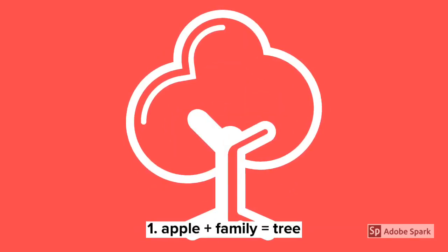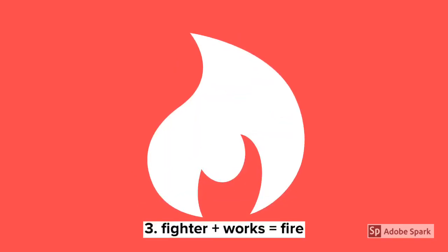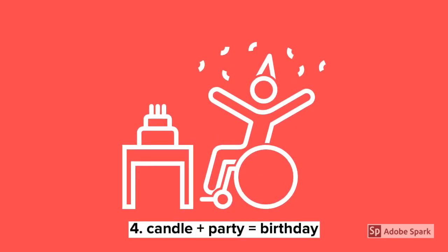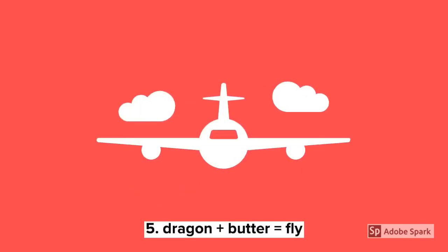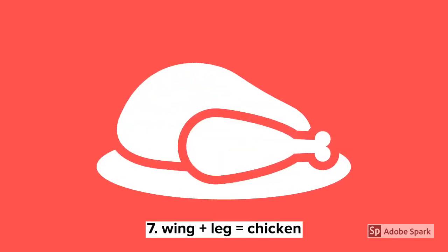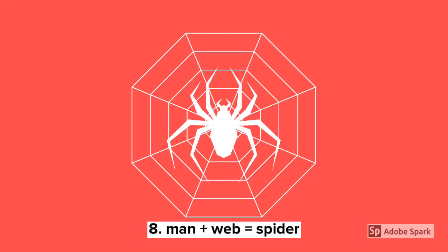The connection between apple and family is tree. The connection between shirt and ball is tea. The connection between fighter and works is fire. The connection between candle and party is birthday. The connection between dragon and butter is fly. The connection between eye and sun is glasses. The connection between wing and leg is — my favorite — chicken. The connection between man and web is spider.